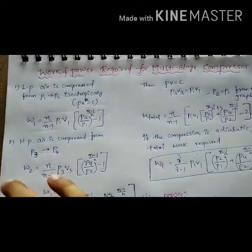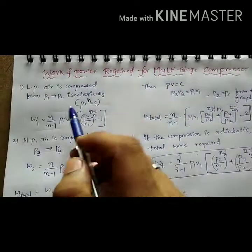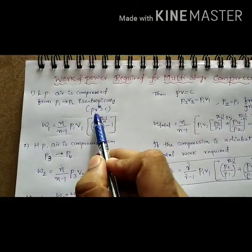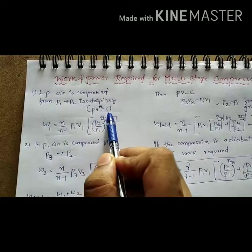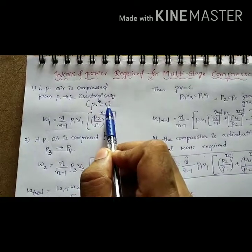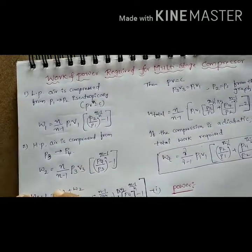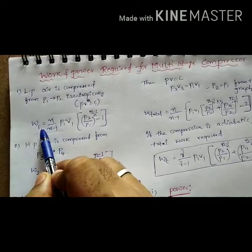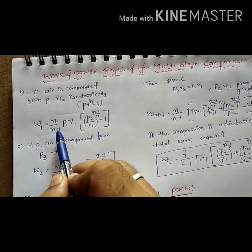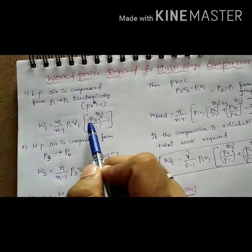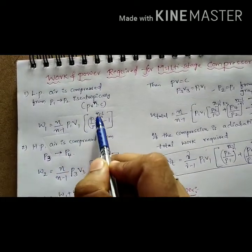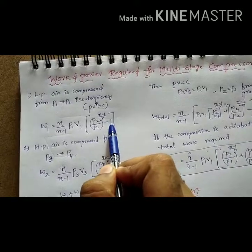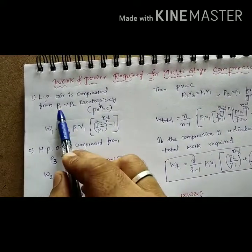We know that the compression is taking place isentropically, that is the equation PV^n = constant. The work done formula, as explained in previous classes, is W = (n / (n−1)) × P1V1 × [(P2/P1)^((n−1)/n) − 1].